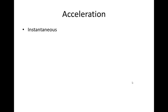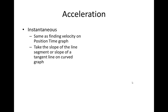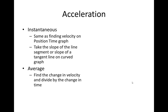Now, acceleration: you have instantaneous acceleration, and you find instantaneous acceleration the same way you find velocity on a position time graph — taking the slope of line segments or the slope of a tangent line on a curved graph. For average acceleration, you find the change in velocity divided by the change in time. Remember, there is no scalar equivalent to acceleration, so again it's delta v over delta t.